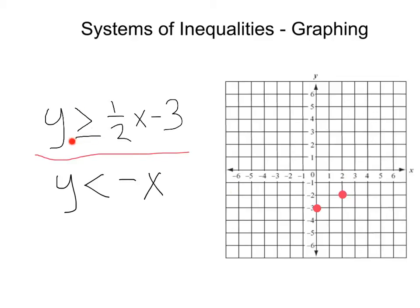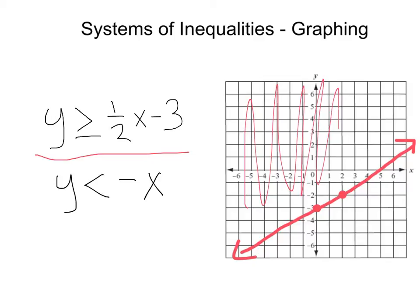Since this is greater than or equal to, we're going to have a solid line rather than a dotted, and because we're greater than, we're going to be shading above in the positive direction.